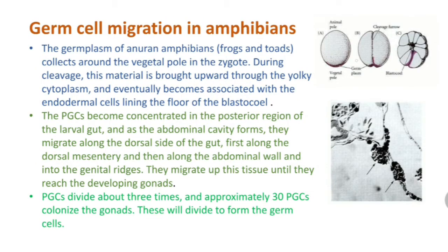Now, coming to germ cell migration in amphibians: the germplasm of anuran amphibians — for example, frogs and toads — collects around the vegetal pole in the zygote. The germ plasm collects around the vegetal pole during cleavage.